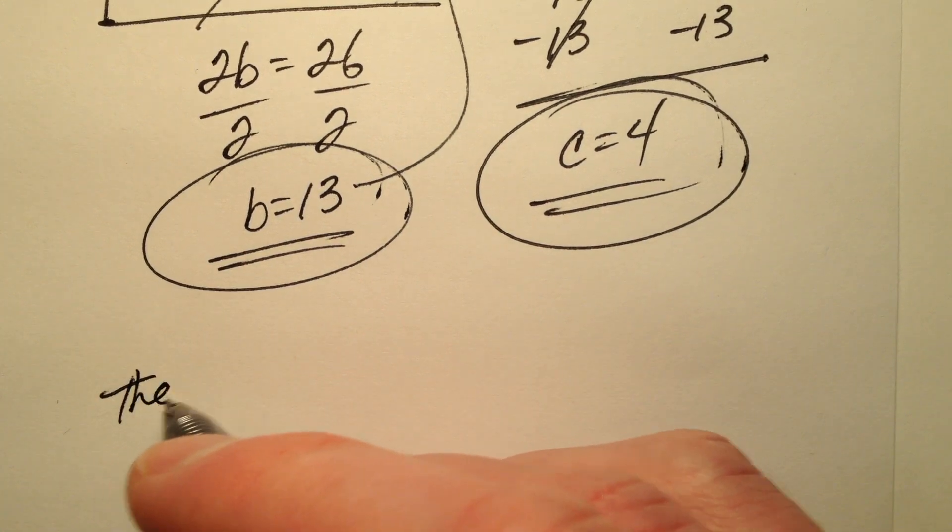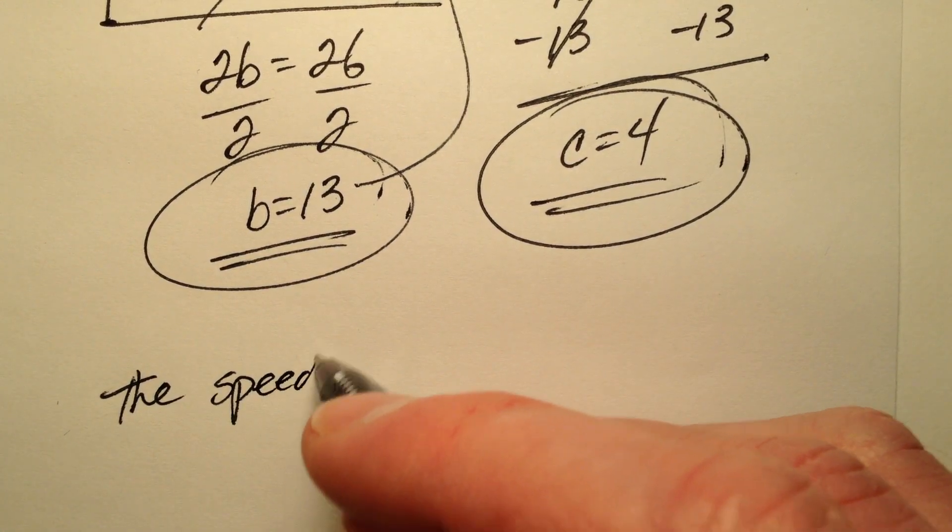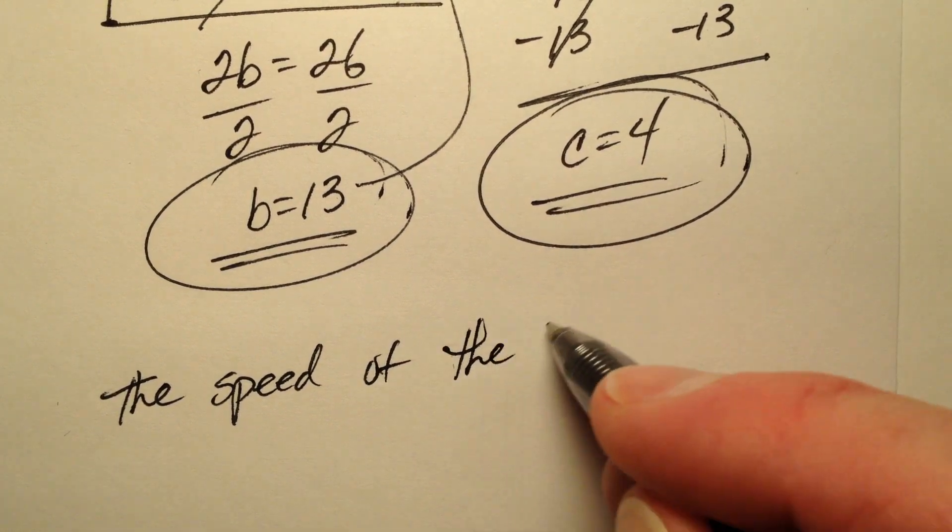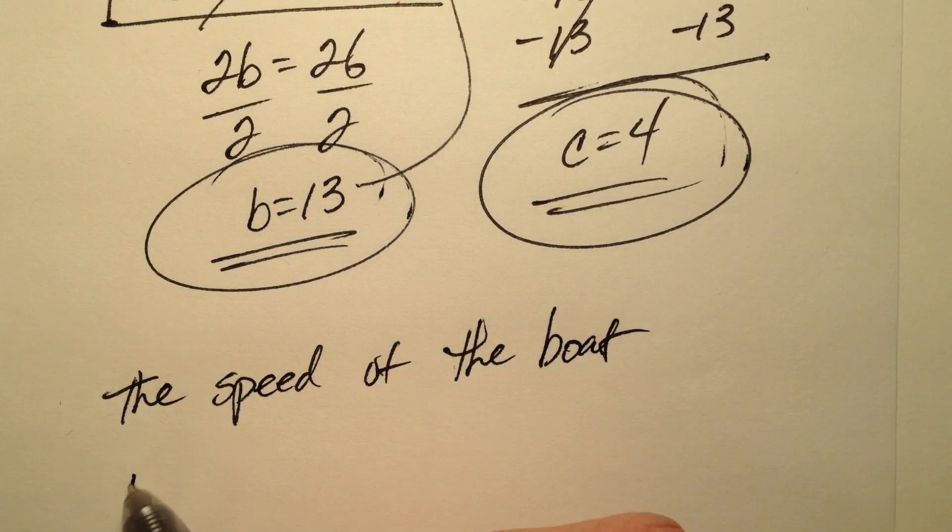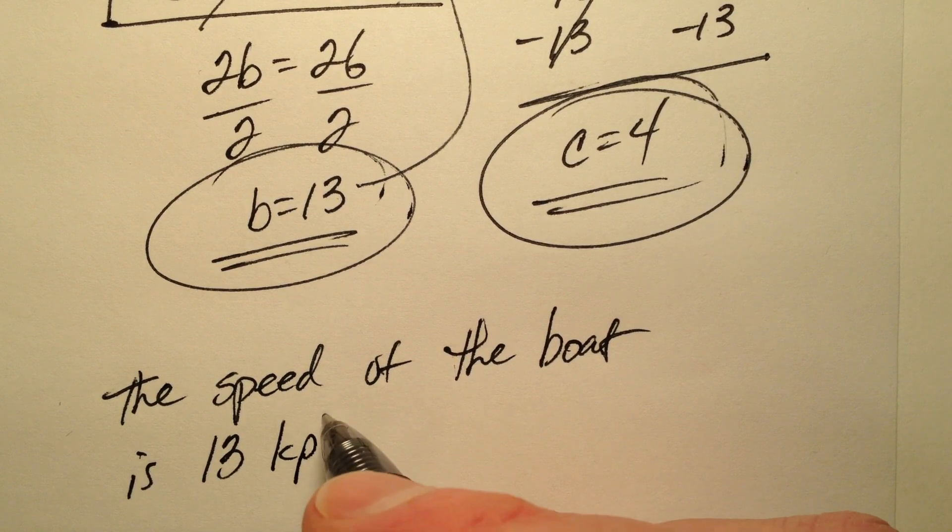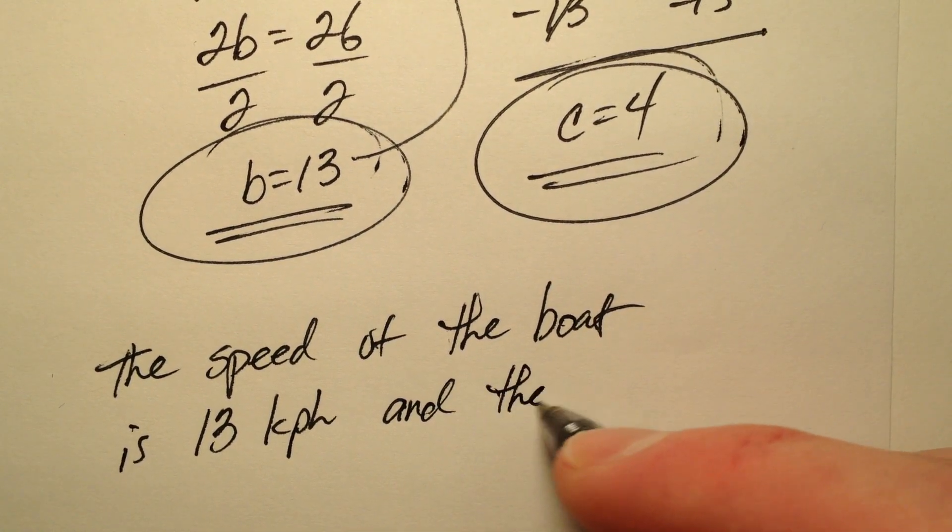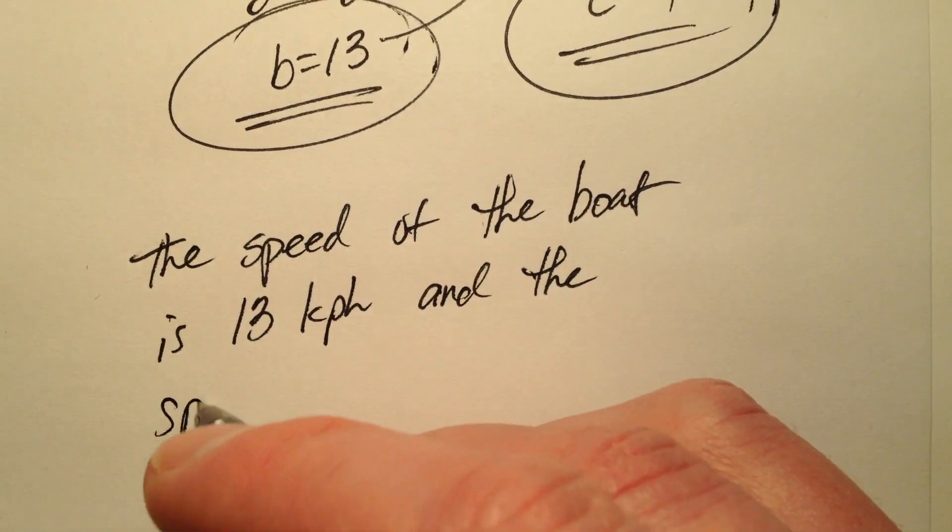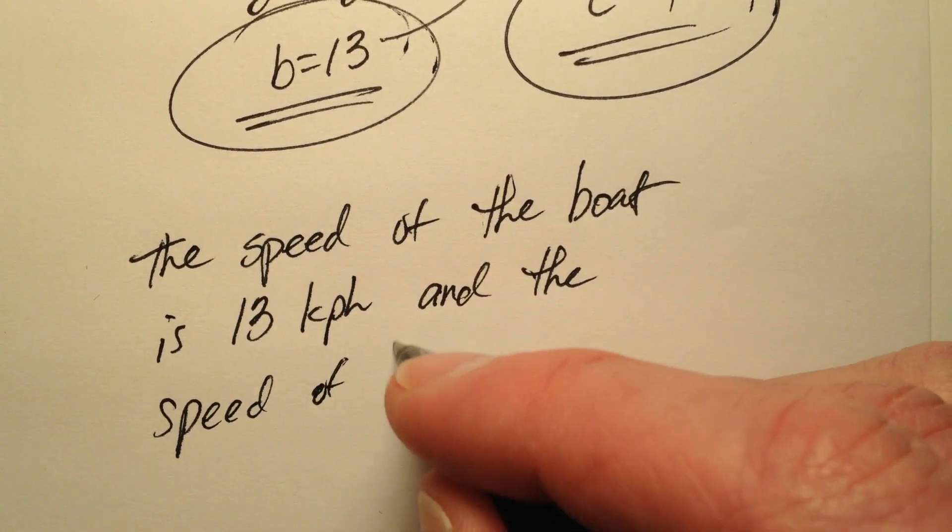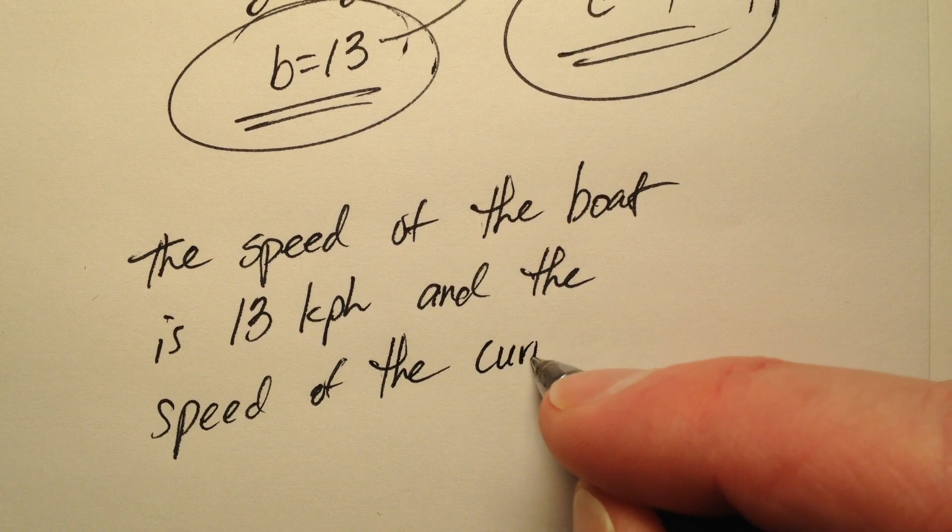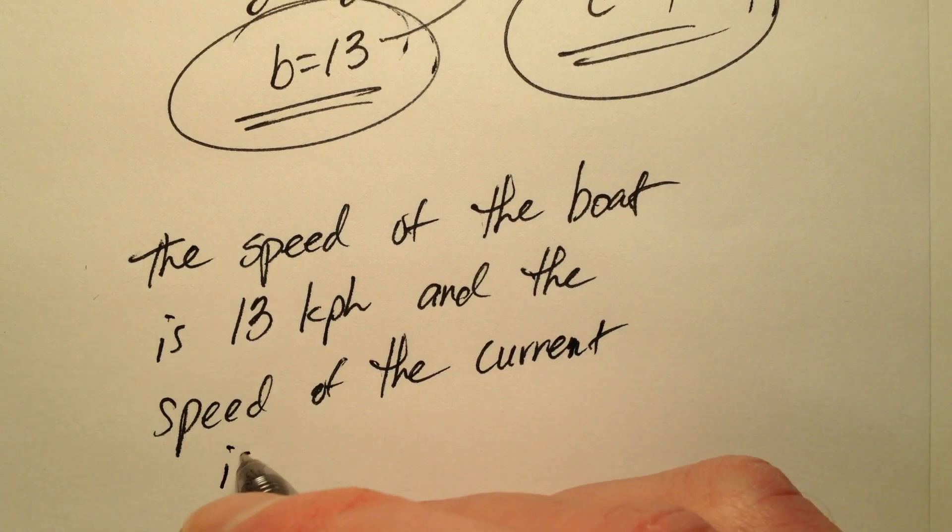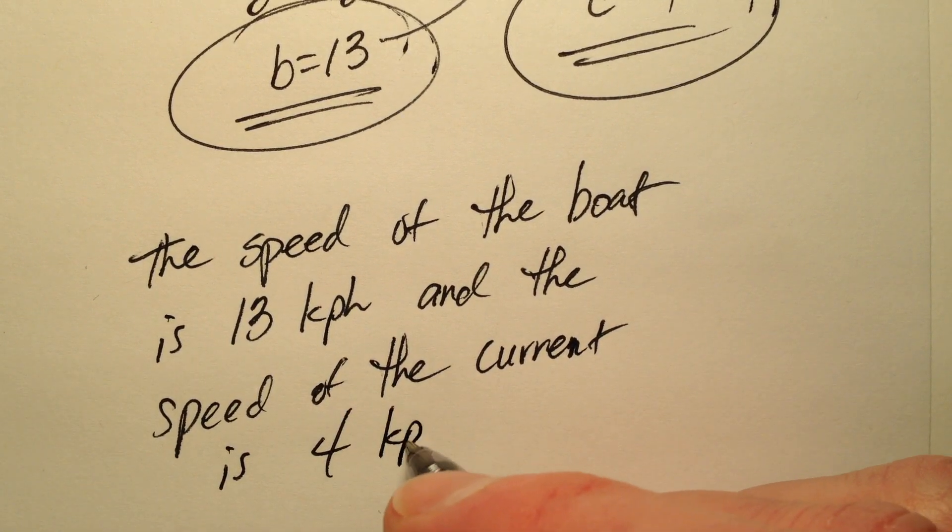So I'm going to say the speed of the boat is 13 kilometers per hour, and I'll just say kph, and the speed of the current is 4 kilometers per hour.